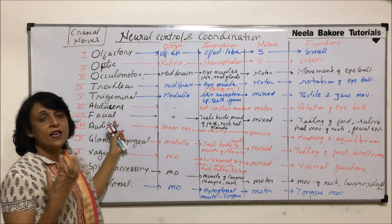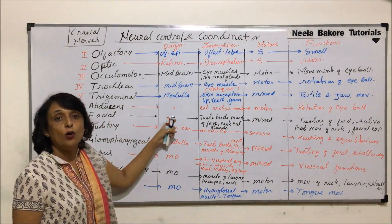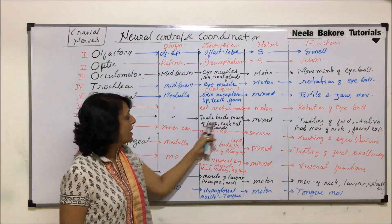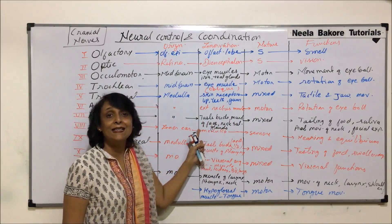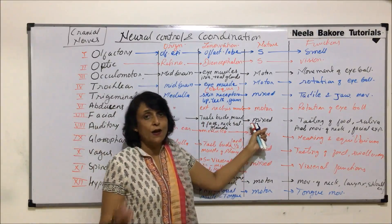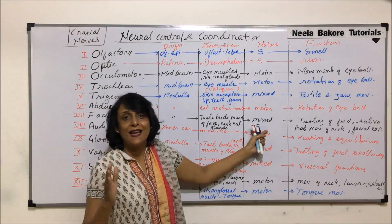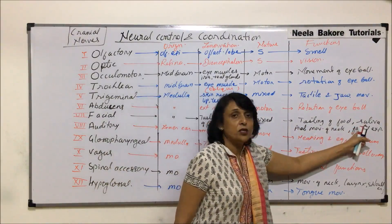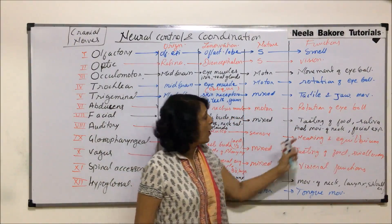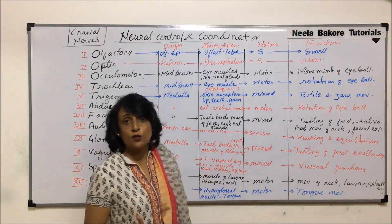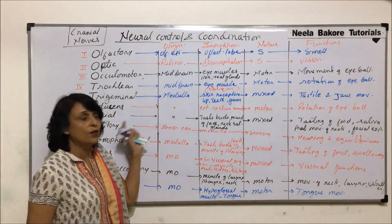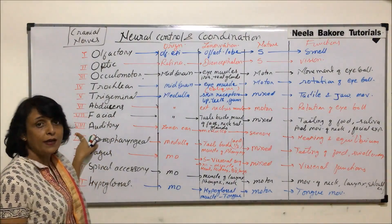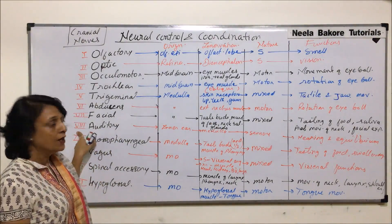Facial — as the name tells us, it is associated with the face. Its origin is the medulla and it goes to the taste buds, muscles of the face and neck, and salivary glands. It is a mixed nerve — the sensory branch is responsible for tasting of food, and the motor branch controls secretion of saliva, movement of the neck, and facial expressions.